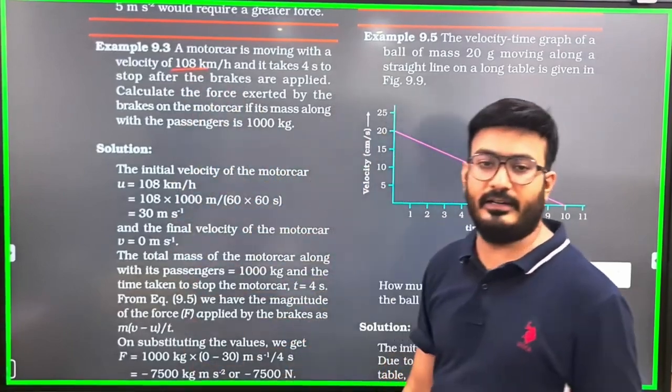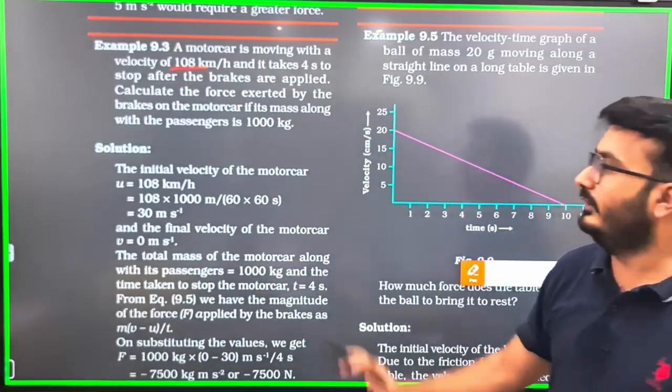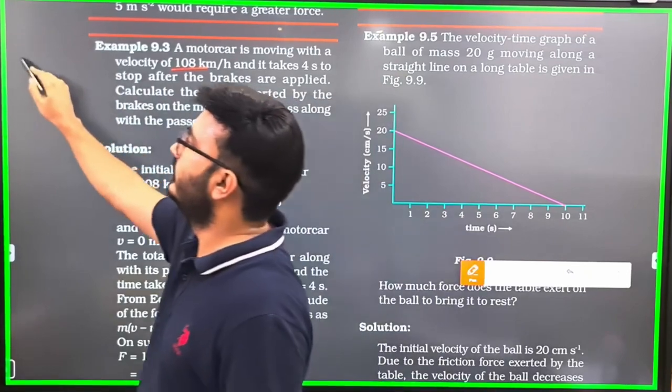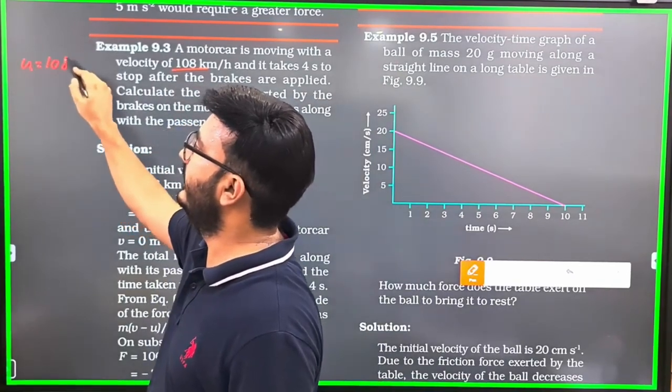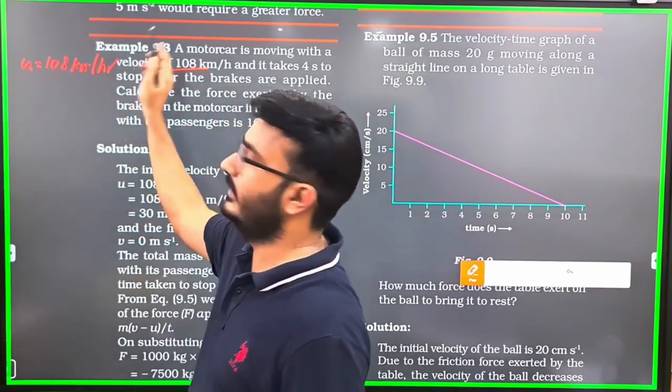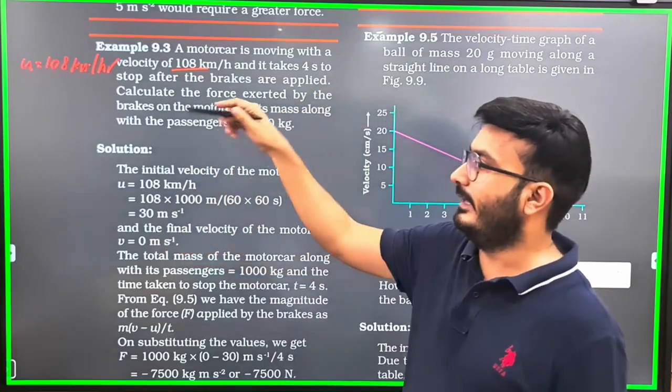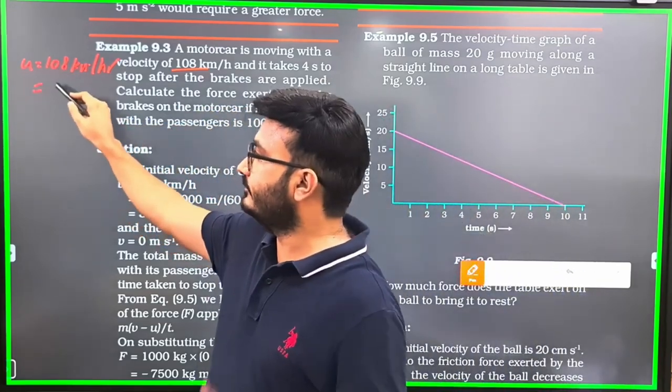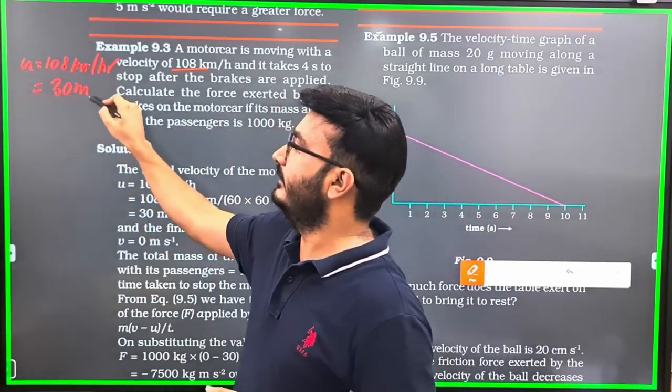Moving with a velocity of 108 km per hour, so this is U. How much is it? 108 km per hour. Which way? How much is it? 30 meters per second.